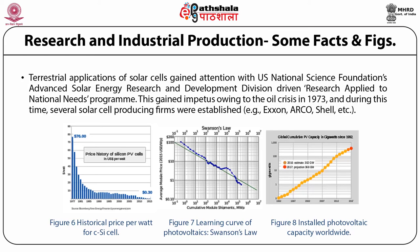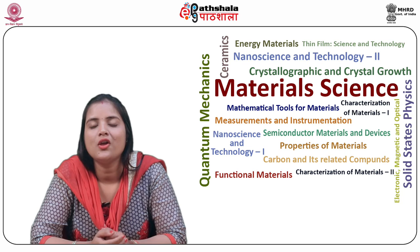Crystalline silicon panels dominate worldwide markets and are mostly manufactured in China and Taiwan. Solar photovoltaics is growing fastest in Asia, where China and Japan presently account for almost 50% of worldwide installation. Globally installed photovoltaic capacity reached nearly 301 gigawatts in 2016, supplying 1.3% of global power.